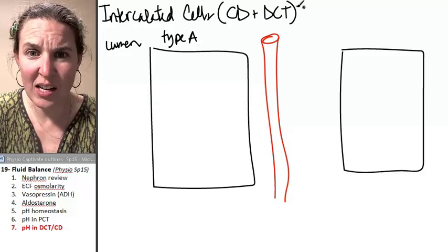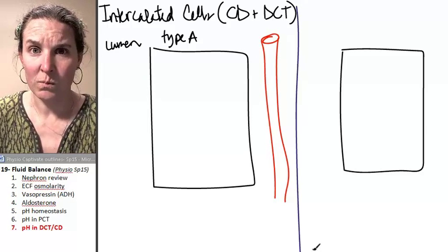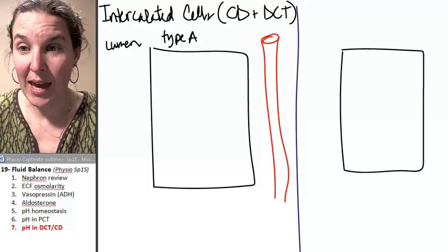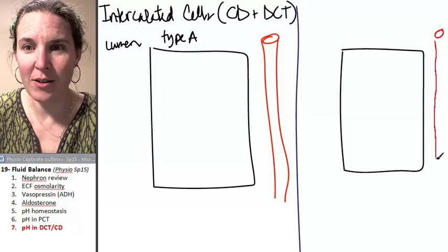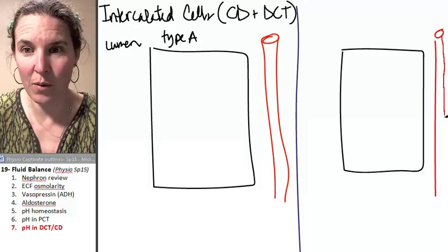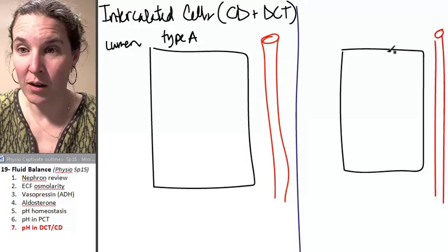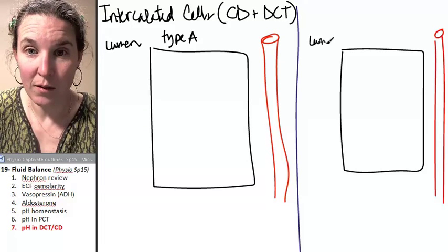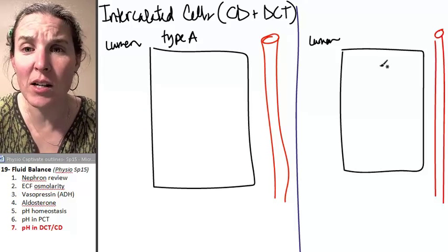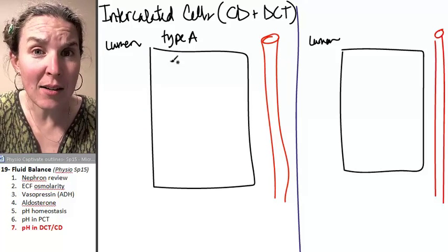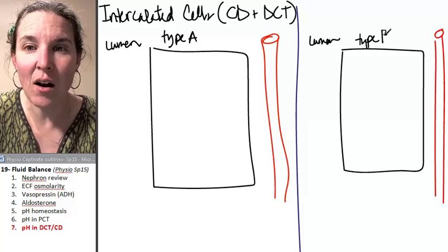And then I'm going to cut my canvas in half. And here's my blood stream on the other side. Do you follow what I'm doing here? I hope so. And here's my lumen on the other side. So I'm doing two pictures side by side so you can compare and contrast. And type A cells are on one side, and type B cells are on the other.